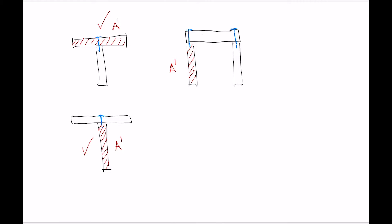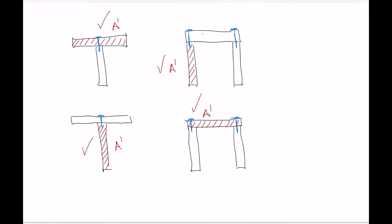Alternatively, for the channel section, you could choose the top piece as A', with the two rows of fasteners holding it on, so the number of rows equals two for that choice versus one for the single-leg choice. For an I-beam, you can choose a flange as A'. If the I-beam is symmetrical with both flanges the same size, the calculation for one flange gives you the answer for both rows of fasteners.